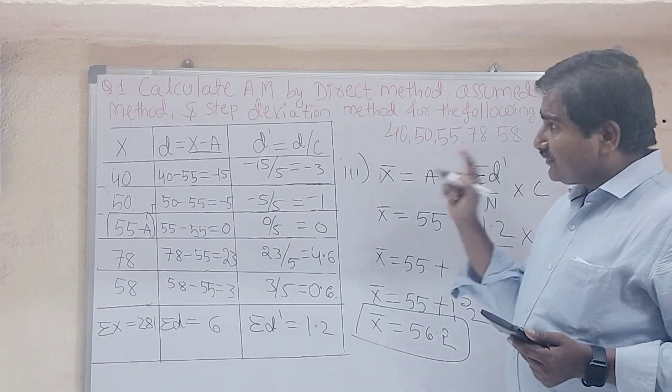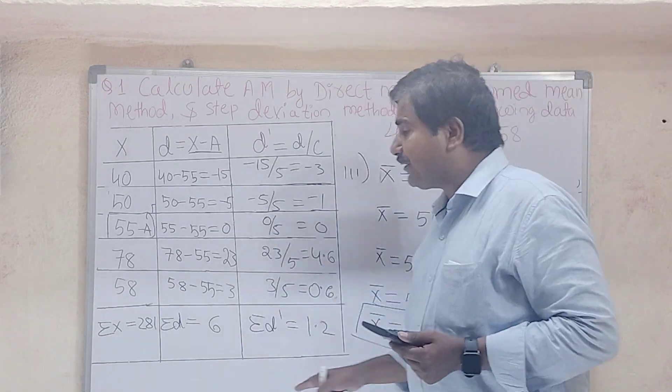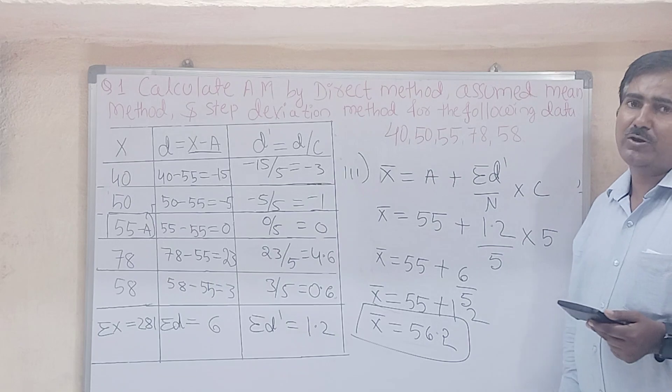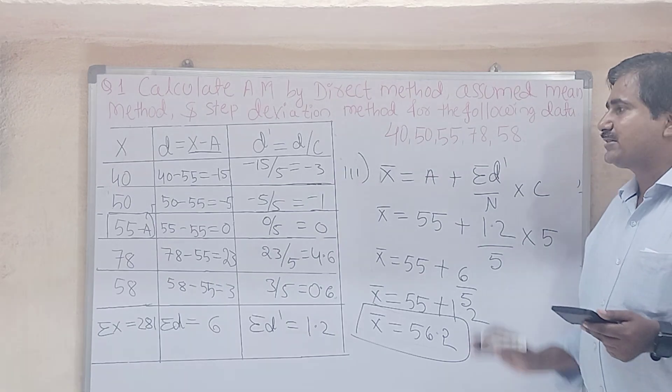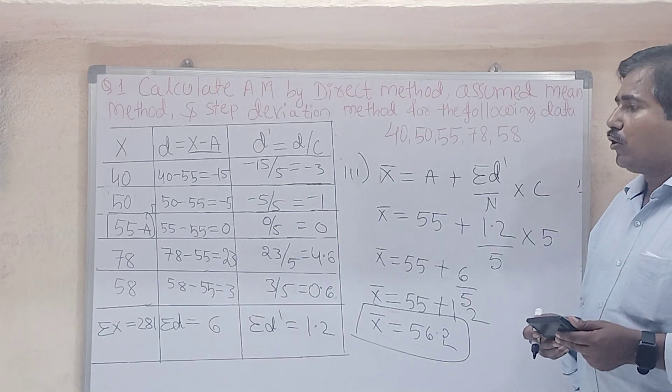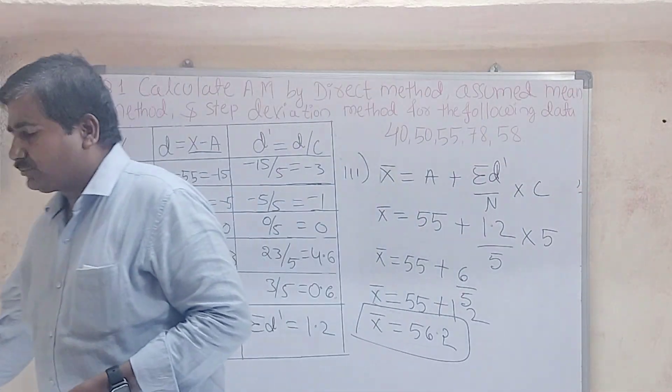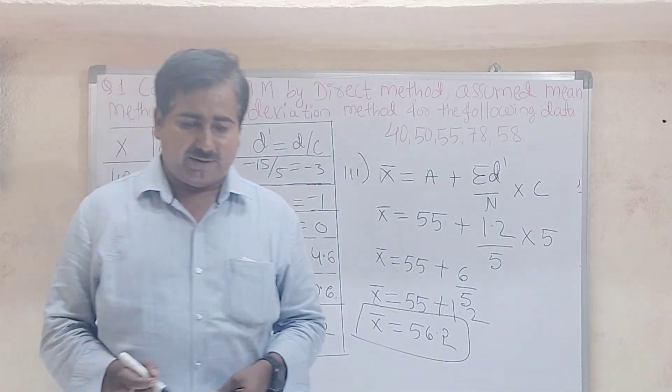All three methods give the same answer: direct method = 56.2, assuming method = 56.2, and step deviation method = 56.2. This is today's concept. Thank you everyone.